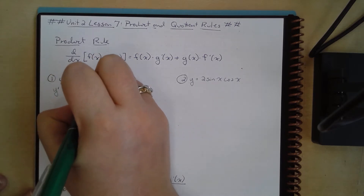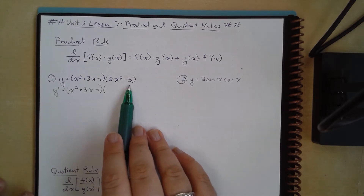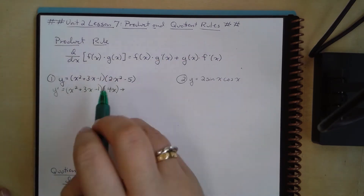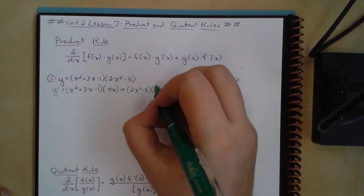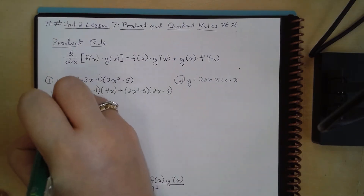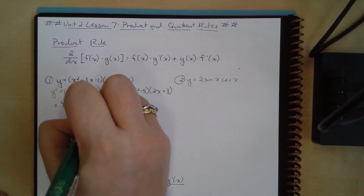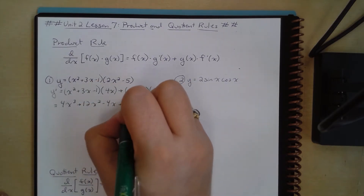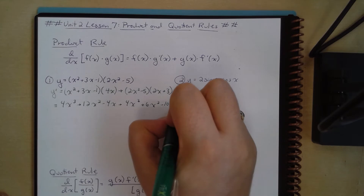So our first is x squared plus 3x minus 1 times the derivative of the second. From basic differentiation rules, that derivative is just 4x. Then plus the second, 2x squared minus 5, times the derivative of the first, which is 2x plus 3. Multiplying through, I get 4x cubed plus 12x squared minus 4x, and then 4x cubed plus 6x squared minus 10x minus 15.